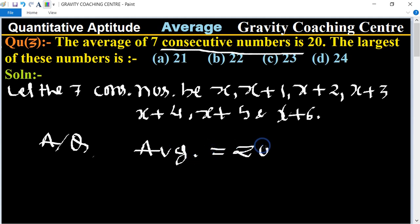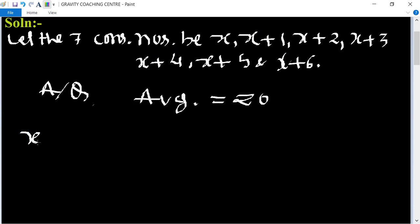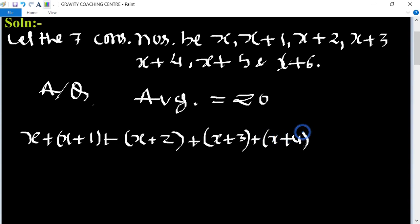So now we use the formula. Sum of the observation: x + (x+1) + (x+2) + (x+3) + (x+4) + (x+5) + (x+6), and its sum is divided by 7.